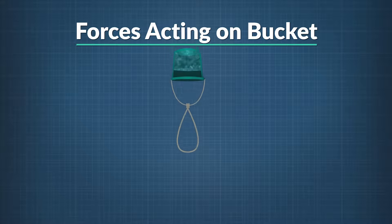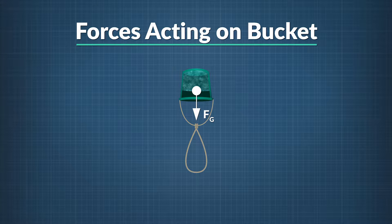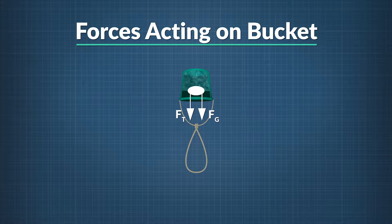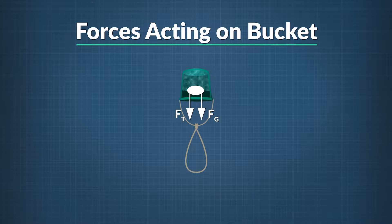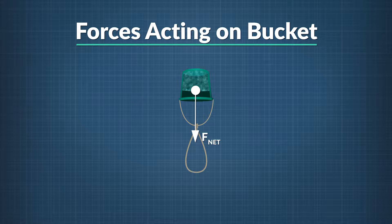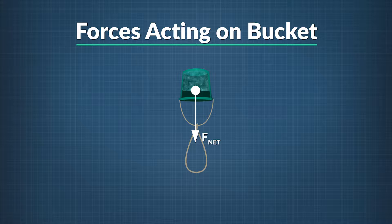The force of gravity, F sub G, acts down. Tension, F sub T, also acts down on the bucket. The force of gravity acts down regardless, but the tension force always acts toward the center of the circle. The tension force and the force of gravity create the net force, and together they make the bucket seek the center of the circle through the centripetal force. In a free body diagram, you don't write centripetal force per se — you write in the specific forces causing the centripetal motion. In this case, gravity and tension.